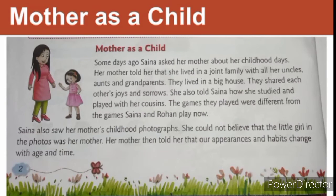She lived in a joint family with all her uncles, aunts and grandparents in a big house. They shared each other's joys and sorrows. Underline 'joys' — J-O-Y-S — and 'sorrows' — S-O-R-R-O-W-S. Joys means happiness and sorrows means sadness. These words are opposites of each other.